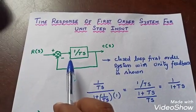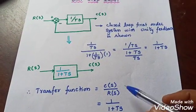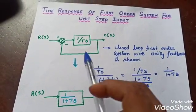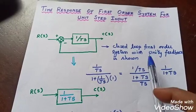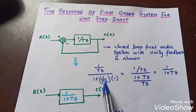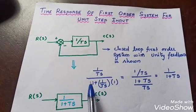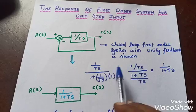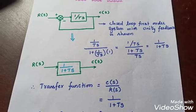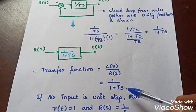This is your closed-loop first order system with unity feedback. We are going to find out the transfer function C(S) divided by R(S). Before that we have to eliminate the feedback path. In the feedback, the gain is 1 because this is unity feedback, so H(S) = 1. Therefore C(S)/R(S) = G(S) divided by 1 plus G(S)·H(S), because this is negative feedback. After simplifying, we get C(S)/R(S) = 1 divided by 1 plus T·S.